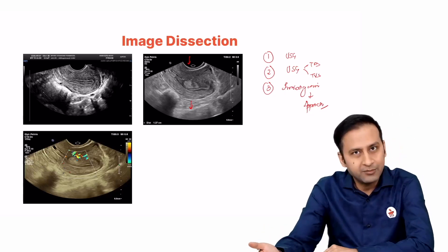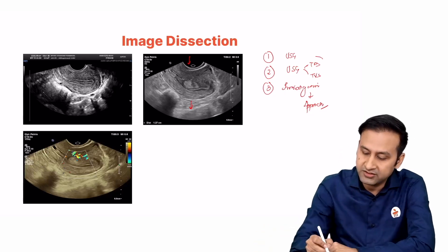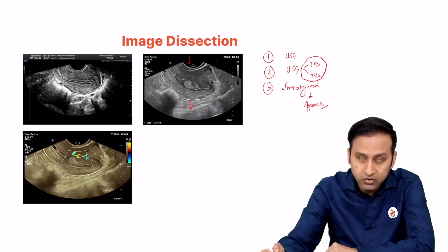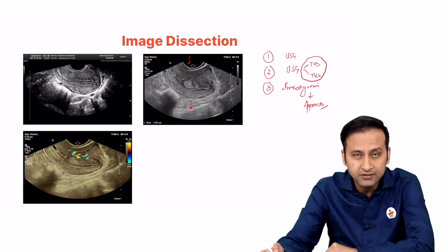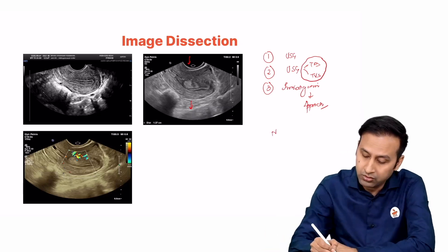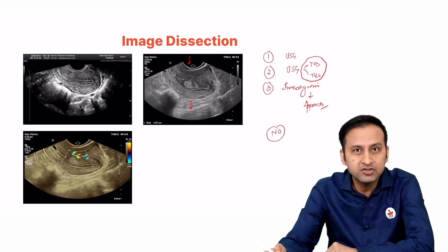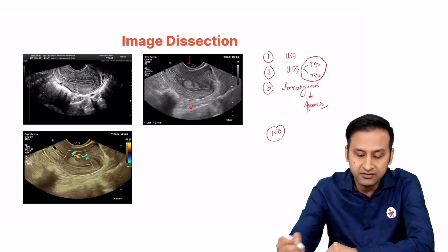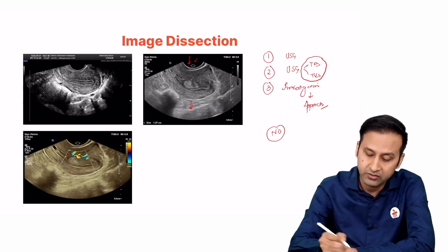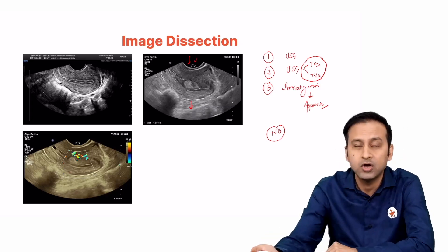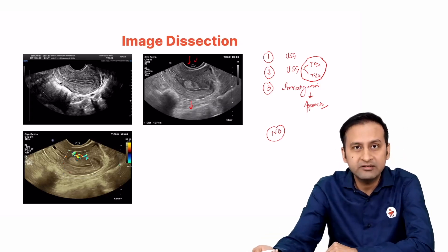Obviously the examiner has told you it is an ultrasound image. Second question: is it a transabdominal or transvaginal scan? Do you see a urinary bladder? No. What is the first organ in contact with the screen? It is the uterus. So it is a transvaginal scan. You have answered two questions easily.